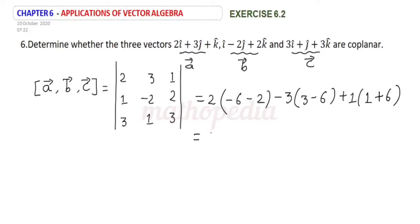So that is equal to 2 into minus 8, minus 3 into minus 3, plus 1 into 7. So minus 16 plus 9 plus 7. So this is equal to minus 16 plus 16, equal to 0.